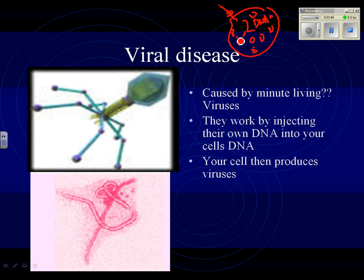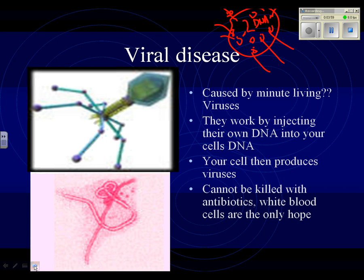Then the cell explodes, viruses come shooting out, and infect other cells. So viral disease can very quickly spread. Viral disease cannot be killed with antibiotics. We have a few antiviral drugs, which work on the mechanisms by which viruses infect your cells, but really we depend on our immune system to fight these off. Some examples of viral diseases: rabies, Ebola virus, and colds are all viral diseases.